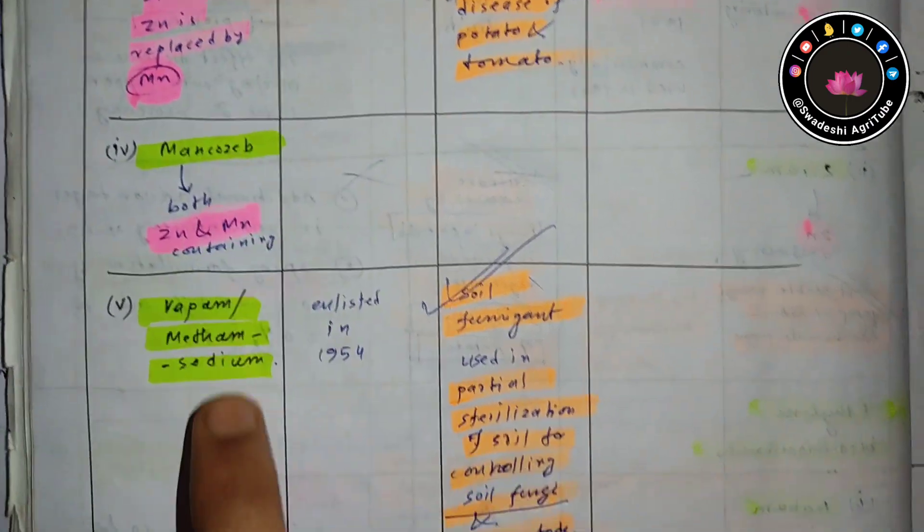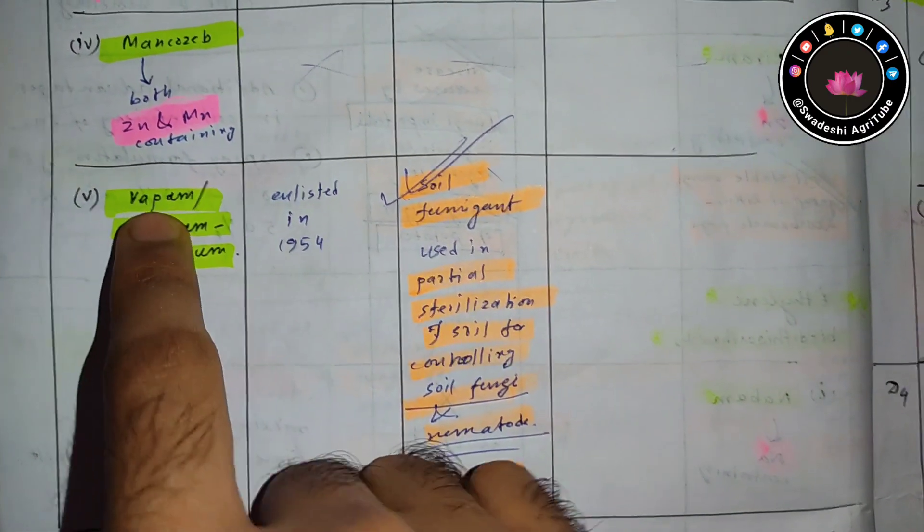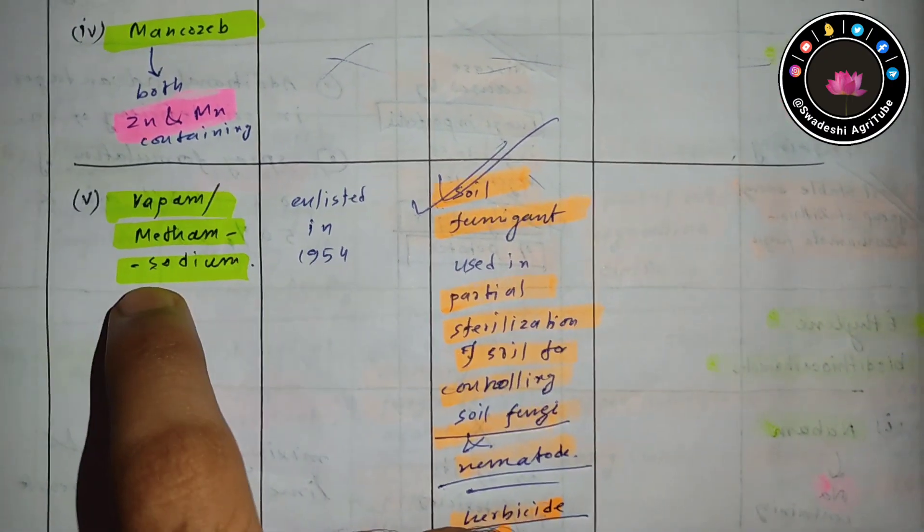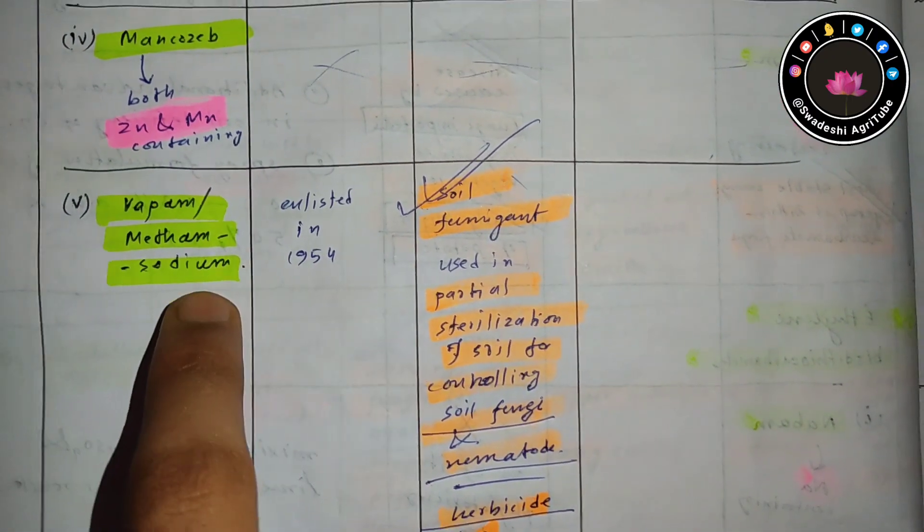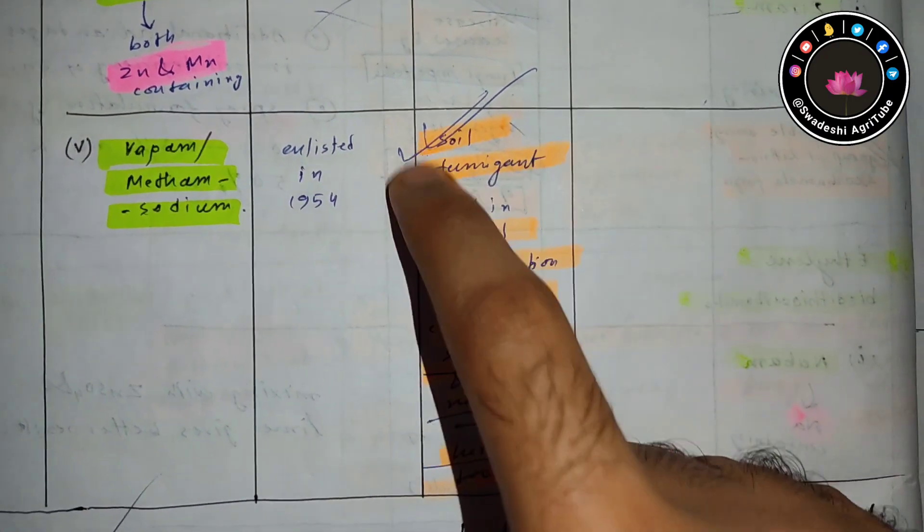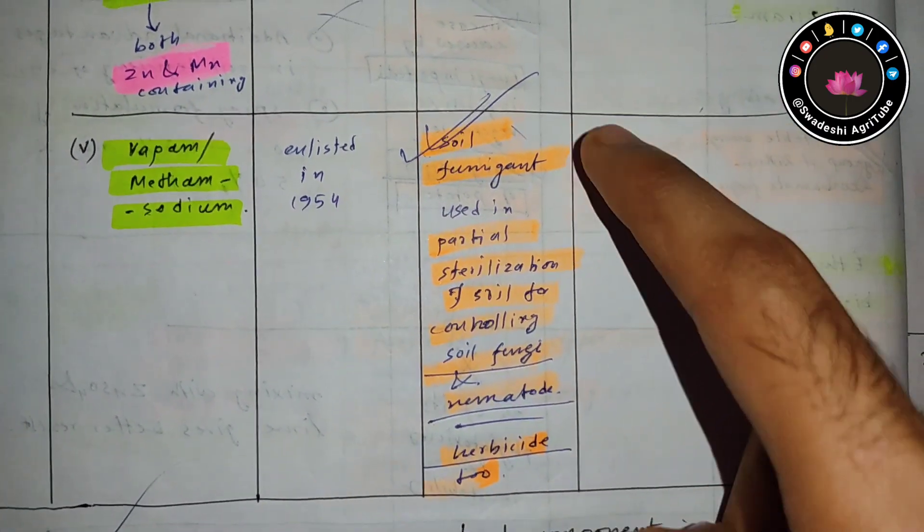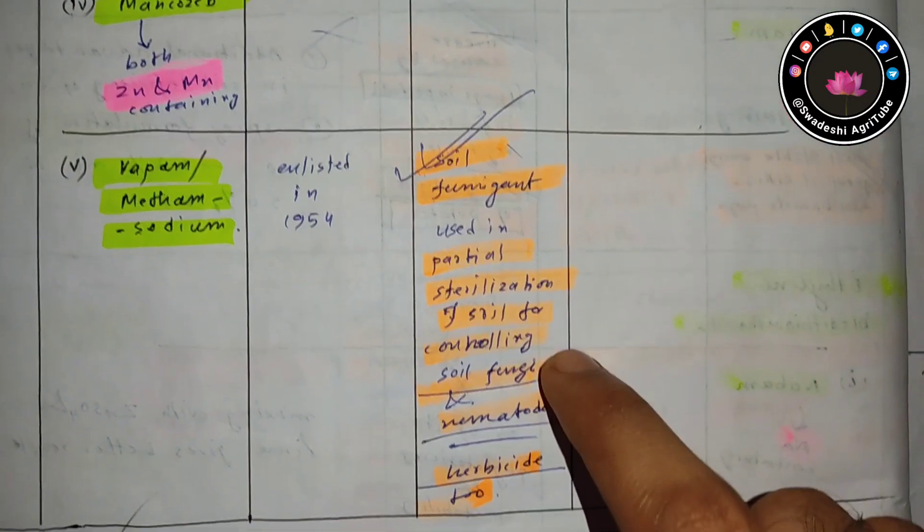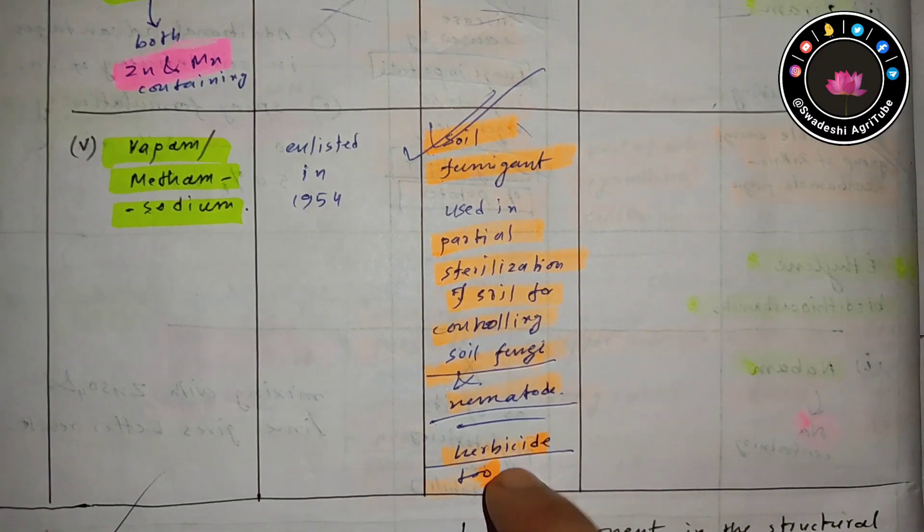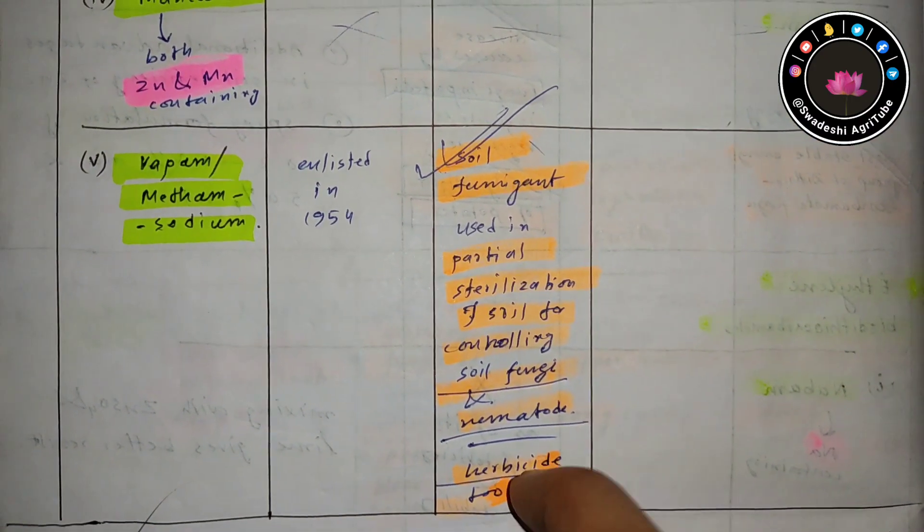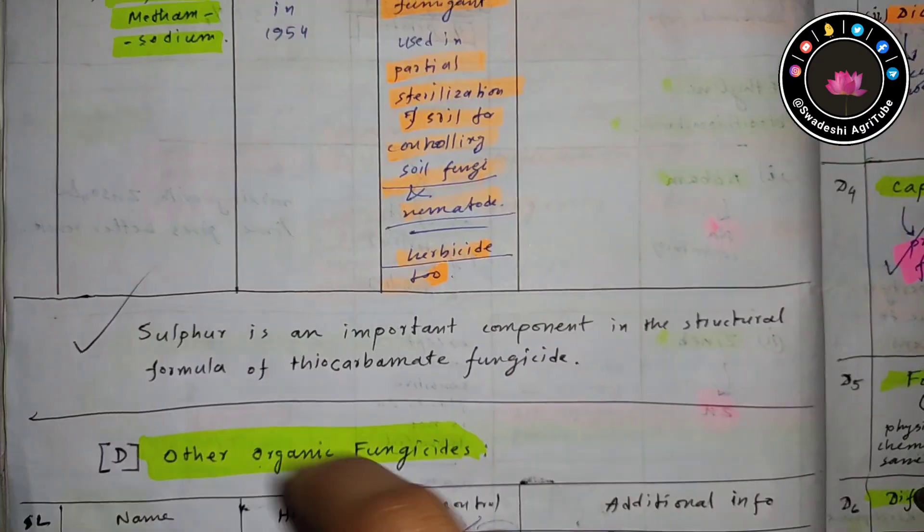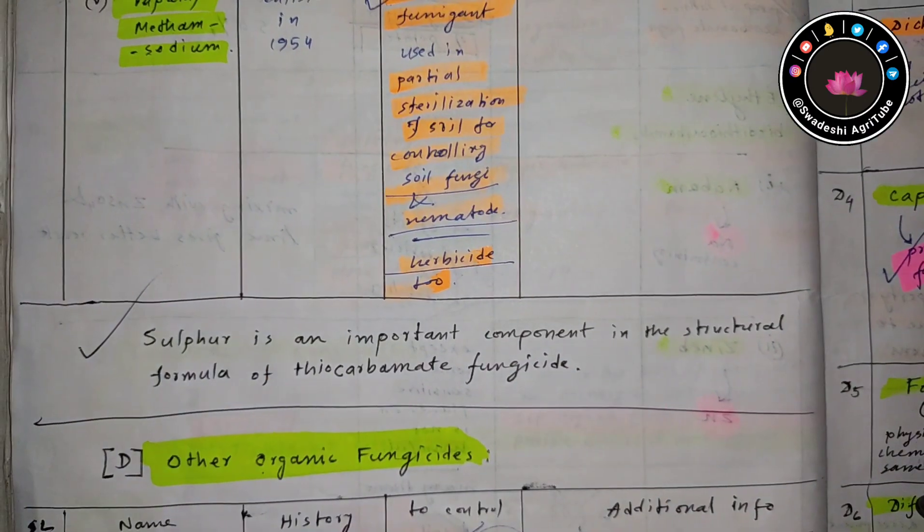The fifth one is vapam. Another name of vapam is metham sodium. It is actually a soil fumigant. As a soil fumigant it can protect plants from soil fungi, from nematodes, and it can also be used as a herbicide. This is important - it's a soil fumigant.